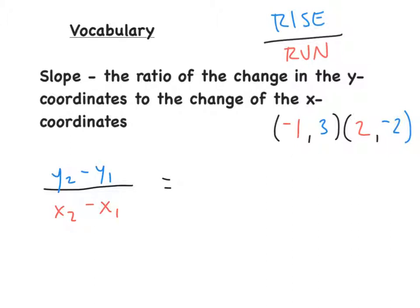Now we're going to focus on slope. Slope and rate of change are very similar. The slope is basically a ratio of the change in y over the change in x. The formula for slope is y2 minus y1 divided by x2 minus x1. Write this formula down.